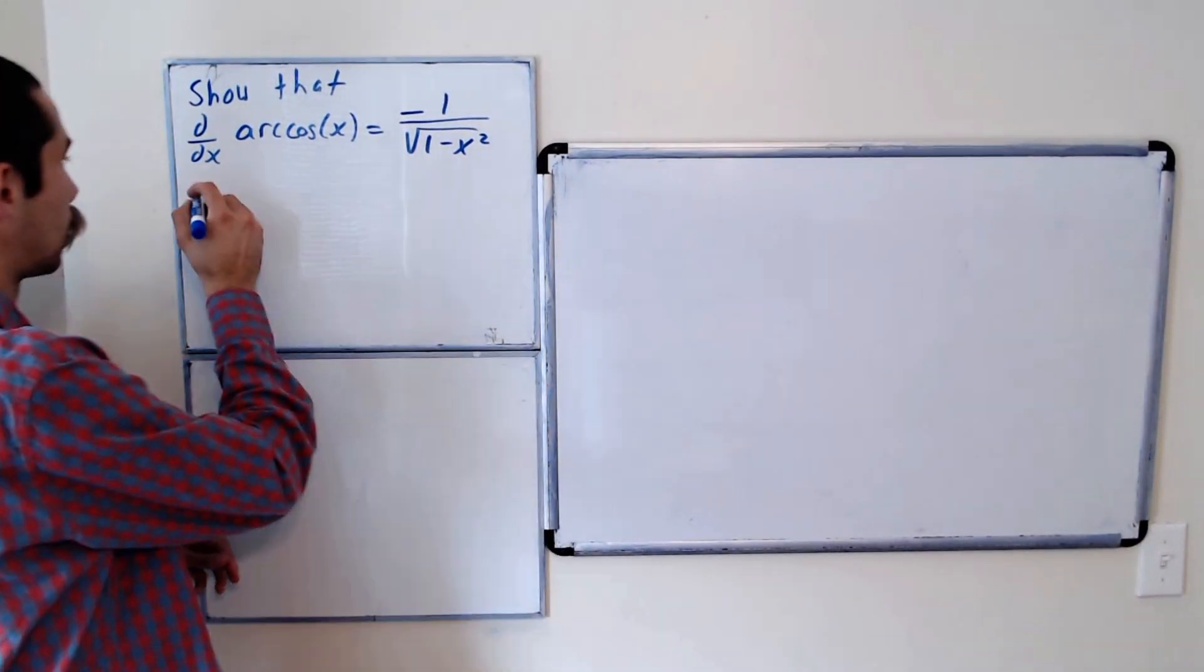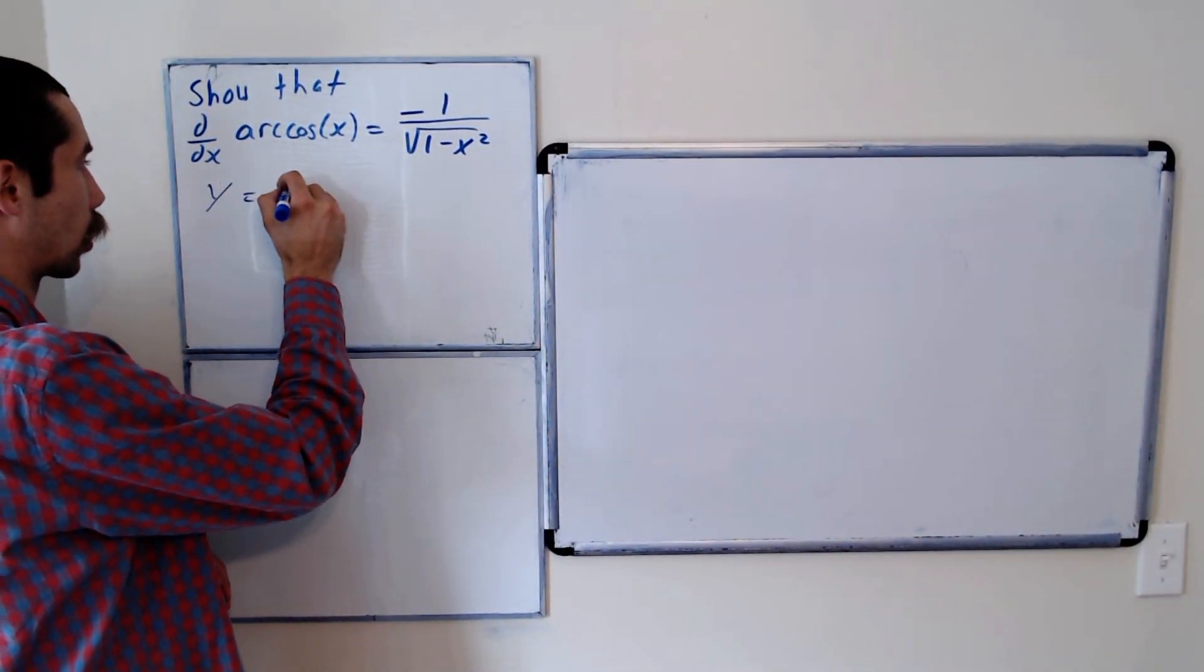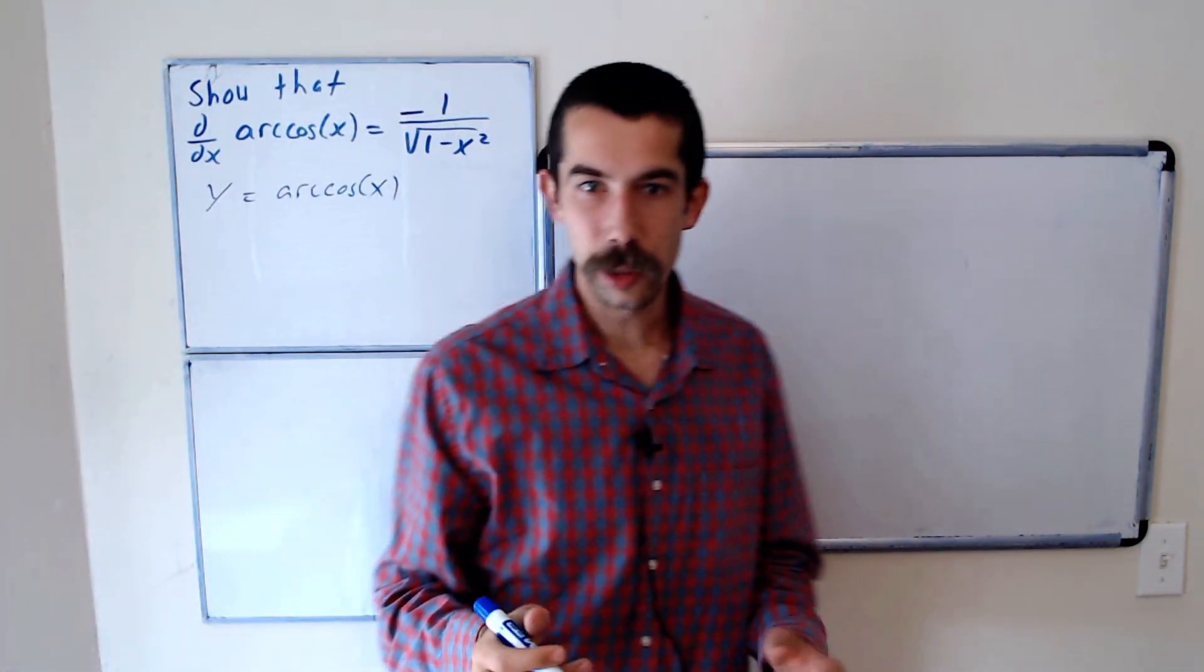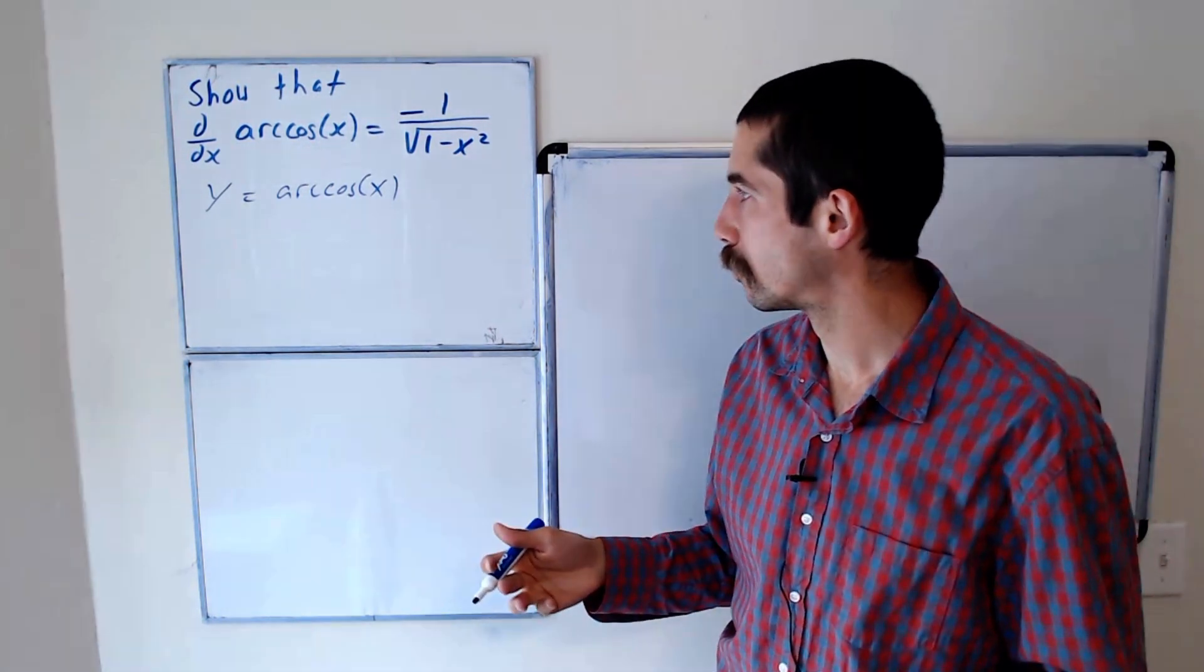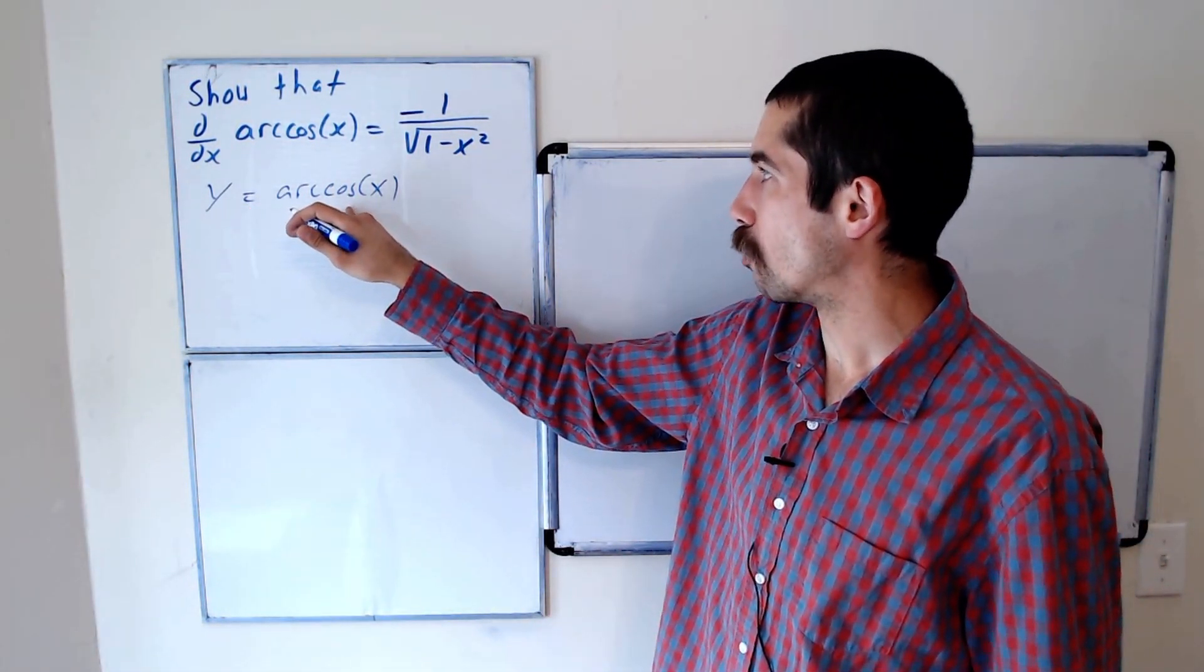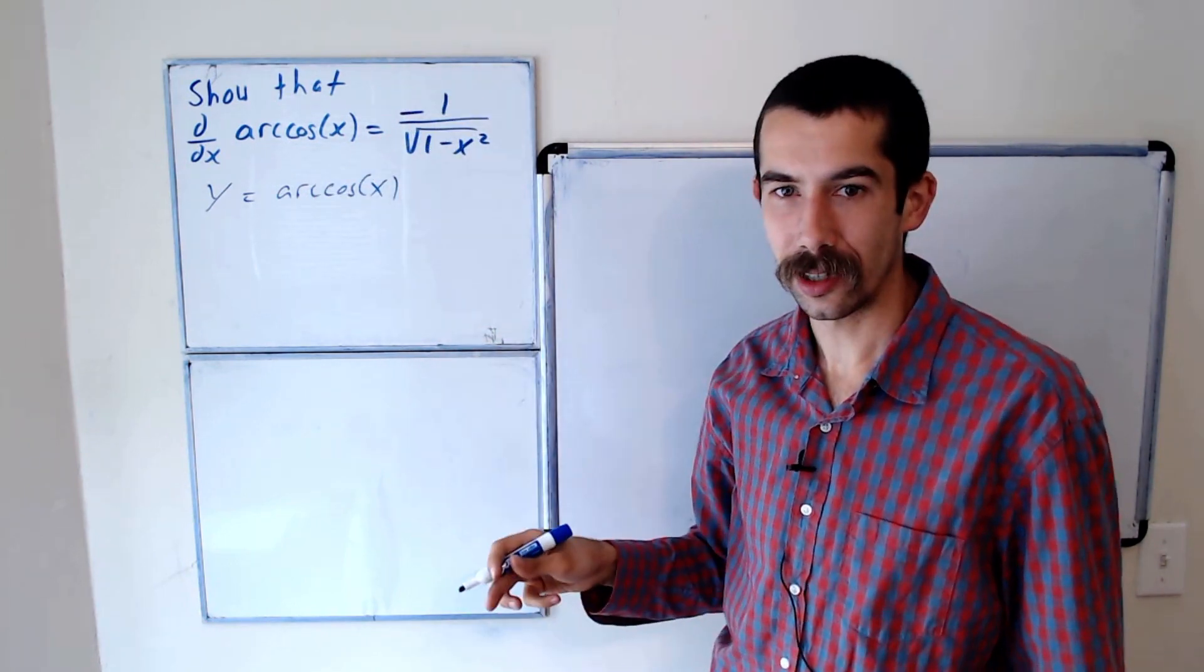So let y equal arc cosine of x. What we're going to do is take the derivative of y. But we don't know how to evaluate the derivative of arc cosine of x. I mean, we hope that this is going to be the final answer.